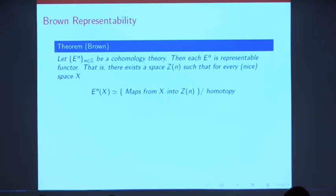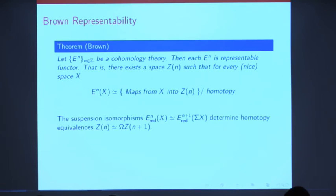So if you have a cohomology theory, as I said earlier, it's not just separately these invariants E^N for all N. They should be related by suspension isomorphisms. And that tells you that these representing spaces, Z_N, should be related to one another. What it tells you is that each Z_N should be equivalent to the loop space on Z_{N+1}.